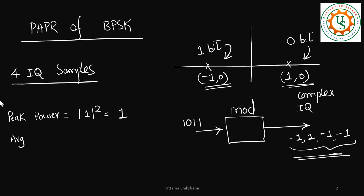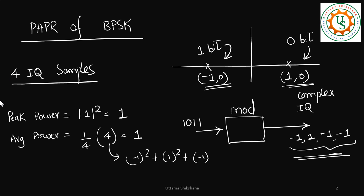Now let us take the average power. To calculate average power, we sum the square of all the values and divide by 4. The sum is: minus 1 squared plus 1 squared plus minus 1 squared plus minus 1 squared, which gives 4, divided by 4 equals 1. So the PAPR is 1.